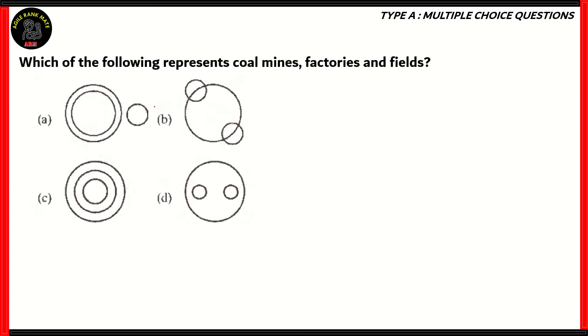Next question: Which of the following represents coal mines, factories, and fields? We have four Venn diagrams. One of these Venn diagrams represents the relation between coal mines, factories, and fields.